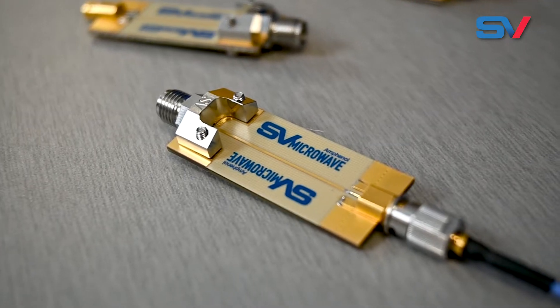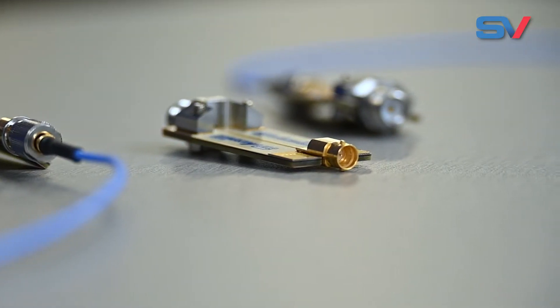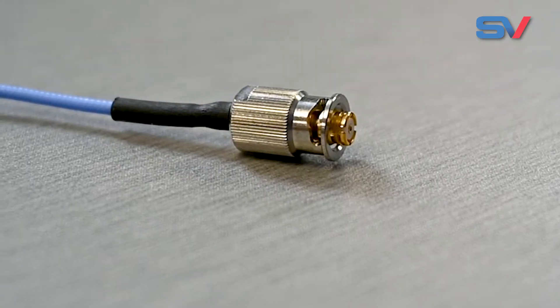The Quarterback line, exclusive to SV, is unique because it uses a quarter turn bayonet coupling nut to securely engage an SMP or SMPM connector. Here's how it works.